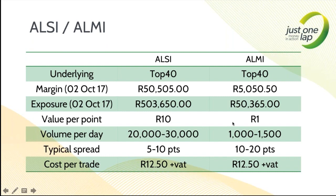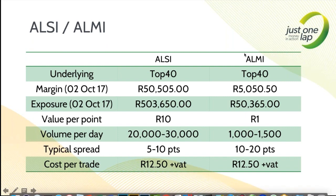If you make 100 points profit on the ALSI, you've made 1,000 rand per contract. On the ALMI, 100 points times 1 rand gives you 100 rand per contract. This means the ALMI is a great place to learn to trade. You can kick off with 10,000 rand and start trading the ALMI, then slowly build up to a full ALSI contract and then scale. Volumes per day are about 20,000 to 30,000 contracts on the ALSI; the ALMI is much smaller at about 1,000 to 1,500 — some big days up to 2,000. Spreads are typically tighter on the ALSI than the ALMI.